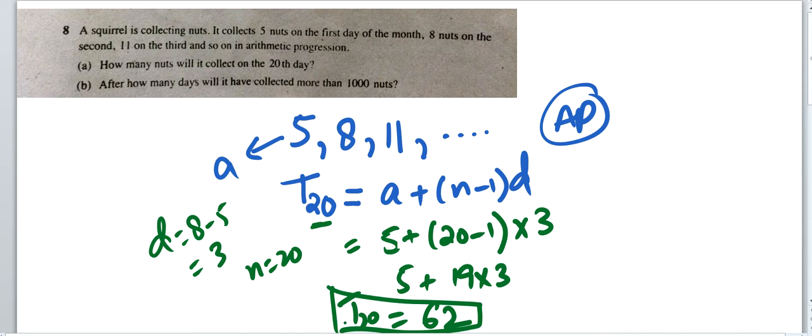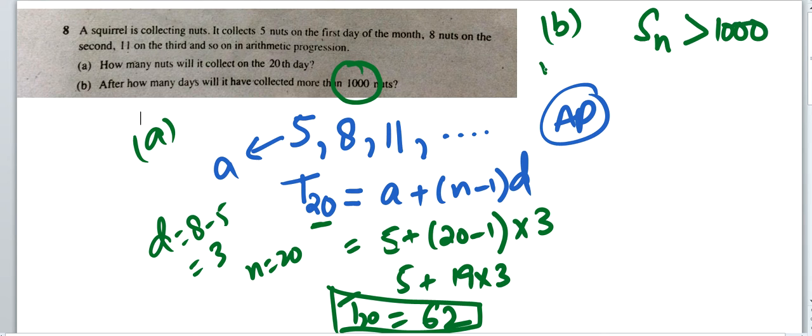That was part a. Now for part b: after how many days will it have collected more than 1000 nuts? This means the sum of all nuts, Sn, is greater than 1000. We want to find the value of n - after how many days.